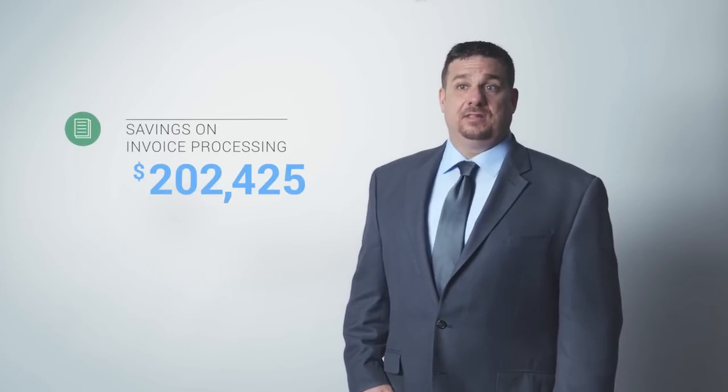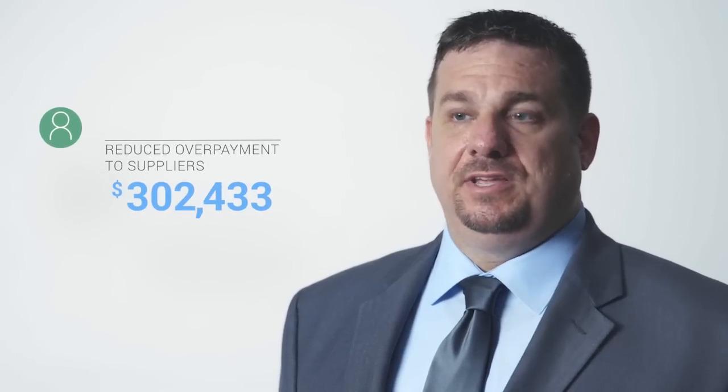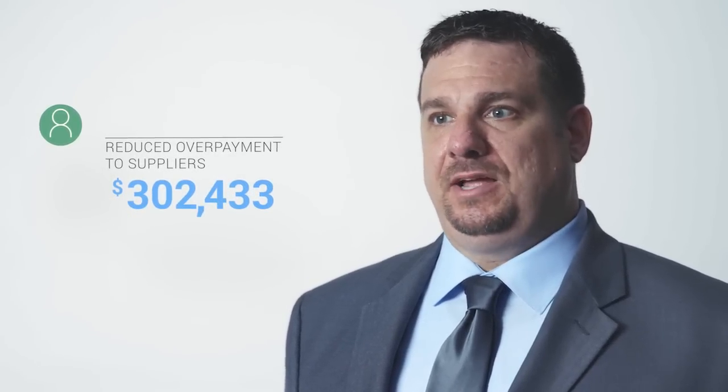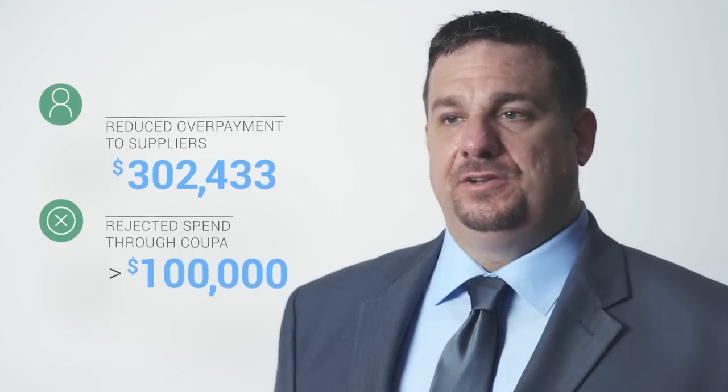We've been able to reduce our cost of issuing a purchase order by over 50%. We've also decreased our cost of invoices by over 30%. First Merit has saved nearly two hundred thousand dollars in invoice processing costs, three hundred thousand dollars in elimination of over payments to suppliers, as well as over a hundred thousand dollars in rejected spend within the tool.